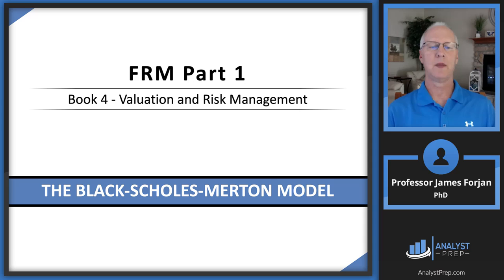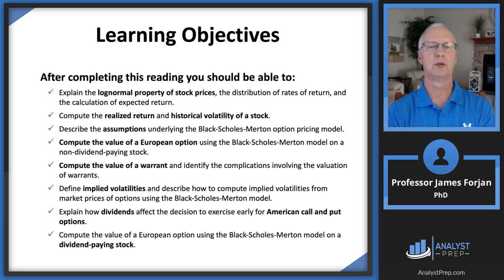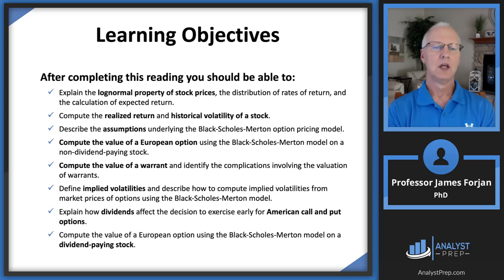This is FRM Part 1, Book 4, Valuation and Risk Management, and the chapter on the Black-Scholes-Merton Option Pricing Model. Not only am I going to show you how cool this model is, I'm going to show you how easy it is. We're going to dive into some of the assumptions underlying the model. The learning objectives ask us to explain log-normal properties, compute realized return and historical volatility, state the assumptions of the model, and then compute the value of an option.